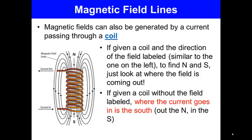If given a coil of wire without a field label, where the current goes in is the south and where it goes out is the north.